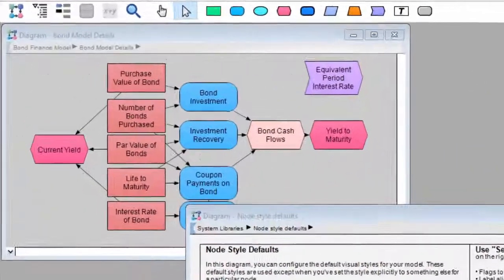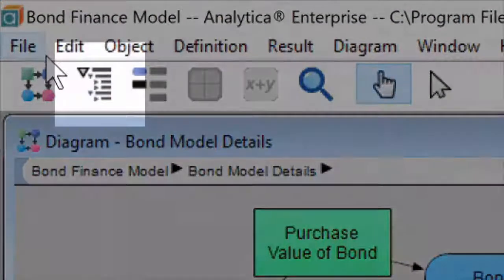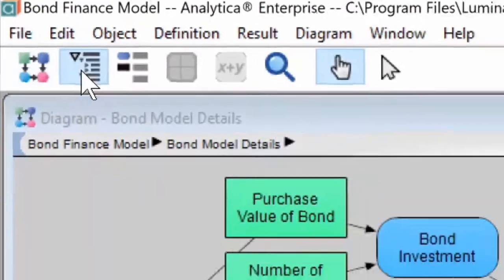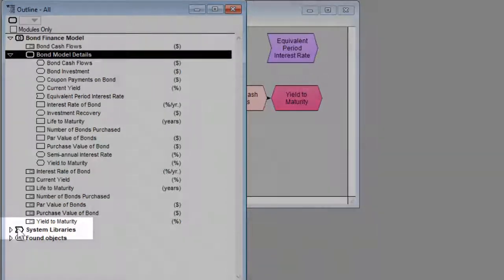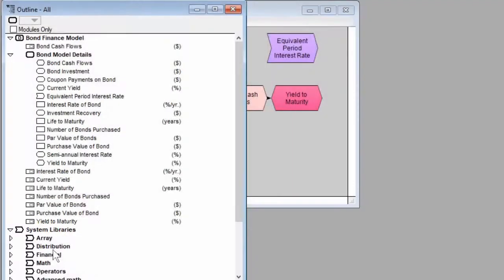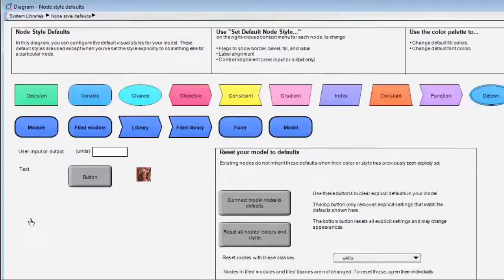To start, open up the model of your choice. For this demonstration, I'll be using the bond finance model. Once loaded, click on the outline window button as shown. A new window will pop up. Hover down to System Libraries and click the arrowhead on the left to expand it. From here, scroll down until you see Node Style Defaults. Double click this to open a new window.